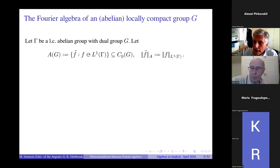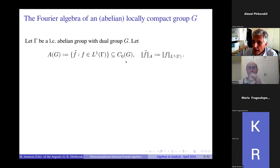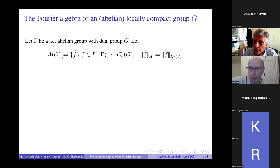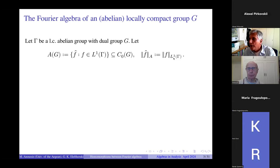By the Riemann-Lebesgue lemma, this is a subset of the continuous functions that vanish at infinity. And again, as in the case of the circle, we transfer the norm from L1 of gamma to the set A of G. So we define the norm of an element of A of G to be the L1 norm of its inverse Fourier transform.